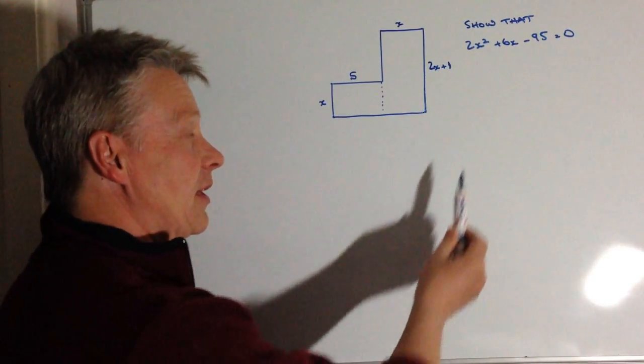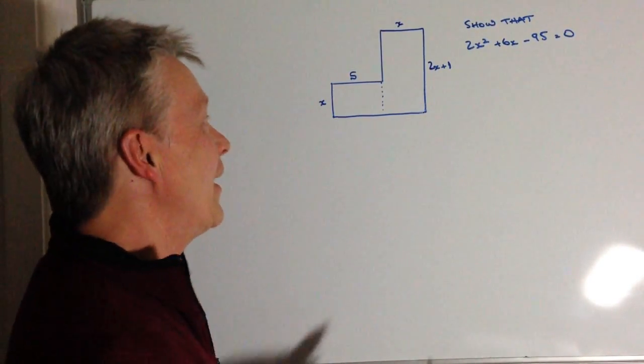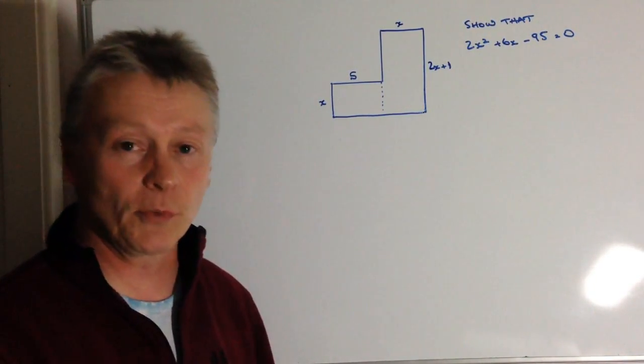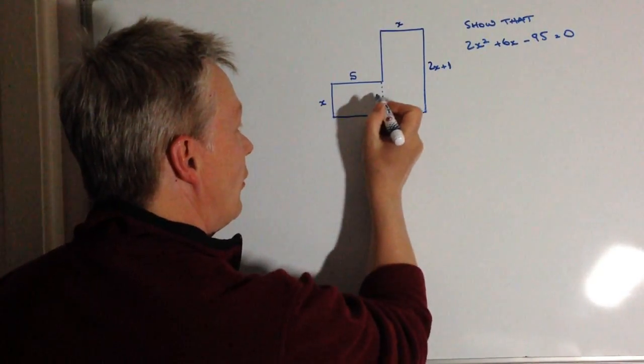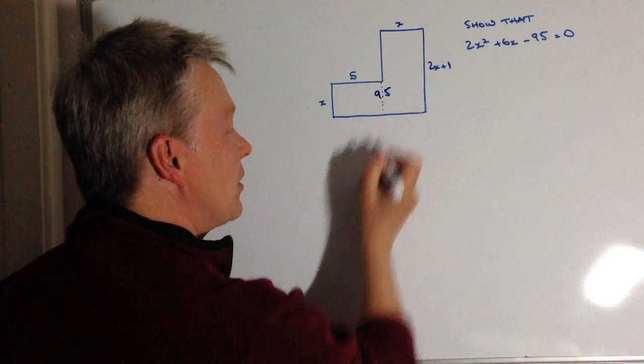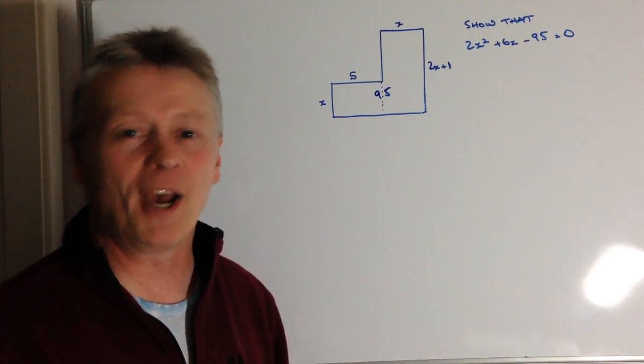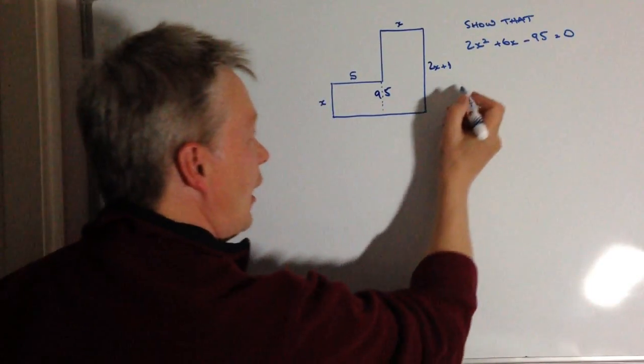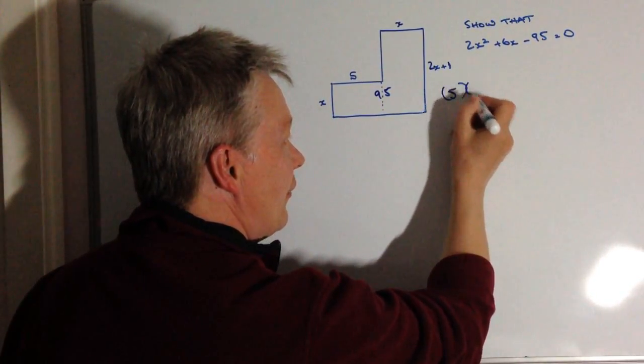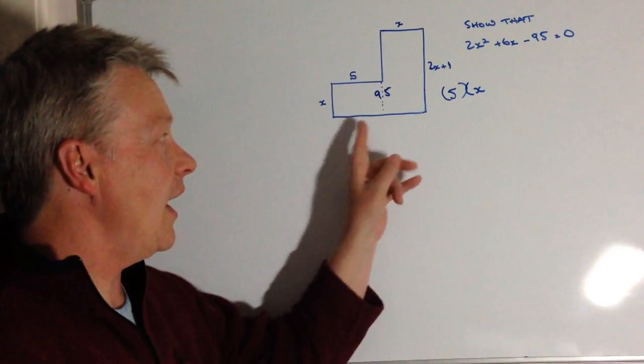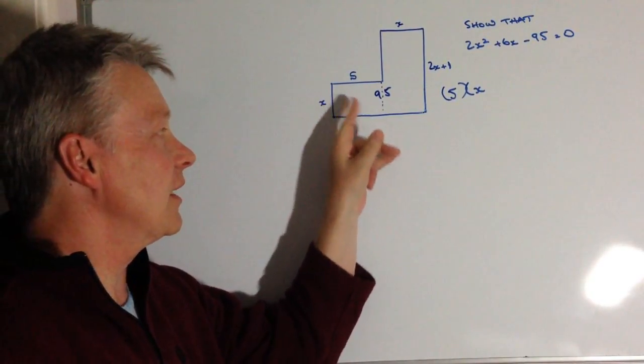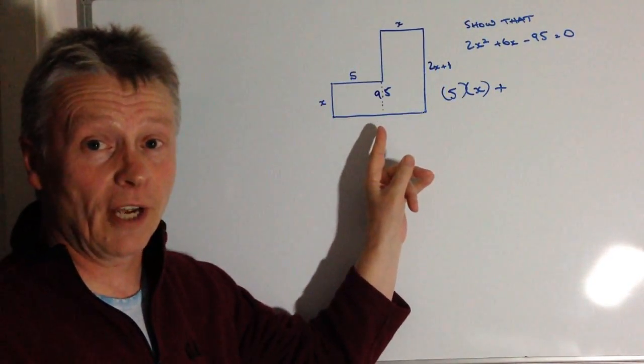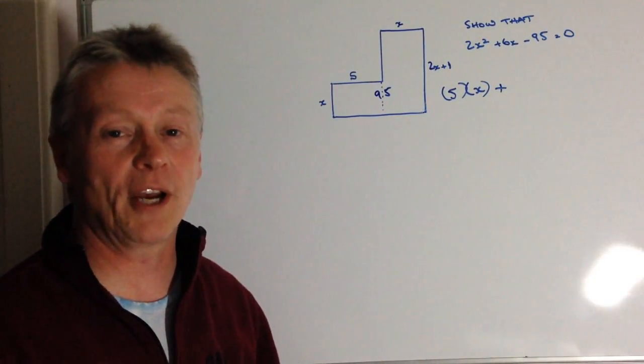So the first thing I'm going to do is I need to show that. Well, it's a compound shape. So what we're really doing is we're saying if we want to work out the area of this, we know or we're given in the question that it's equal to 95 centimeters squared or meters squared. So the first thing I'm going to do is I'm going to multiply 5 and x together, because that will then give me the area of this particular small rectangle. And then I'm going to add that to the slightly larger rectangle, which is x multiplied by 2x plus 1.